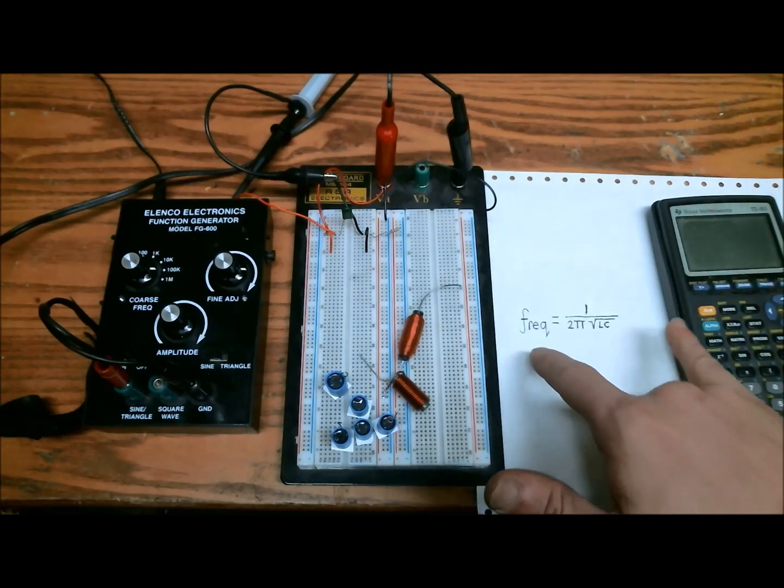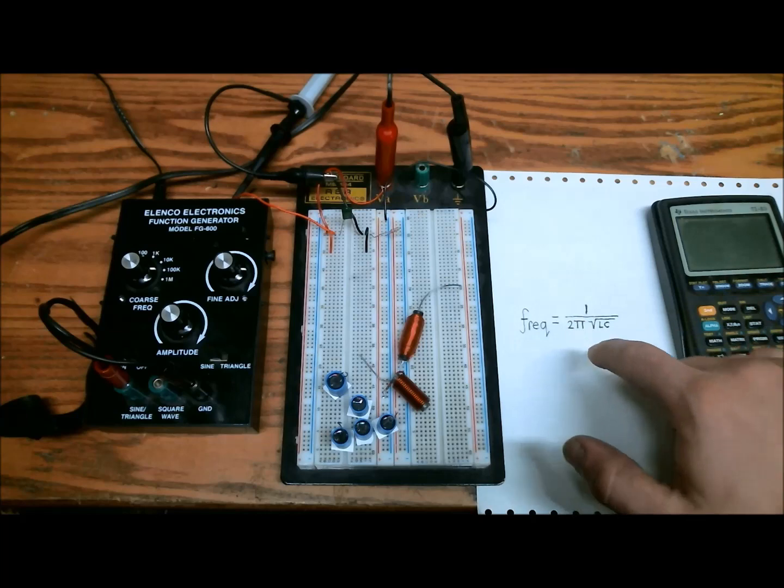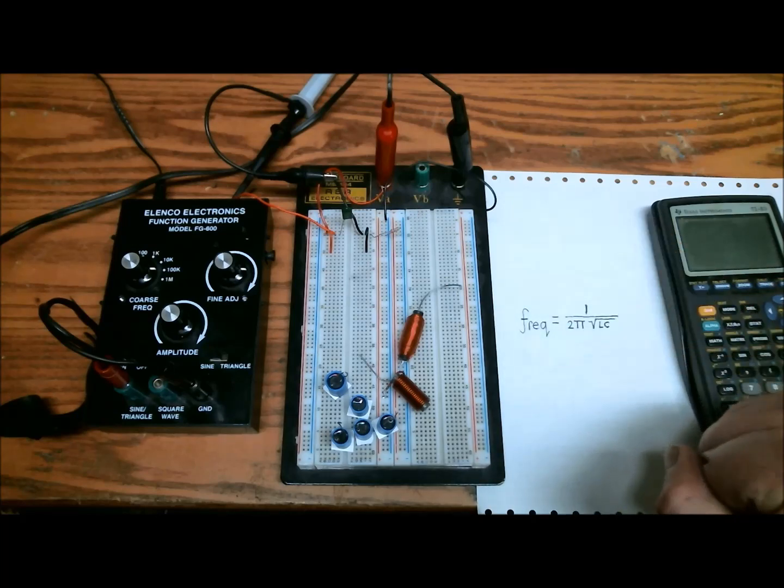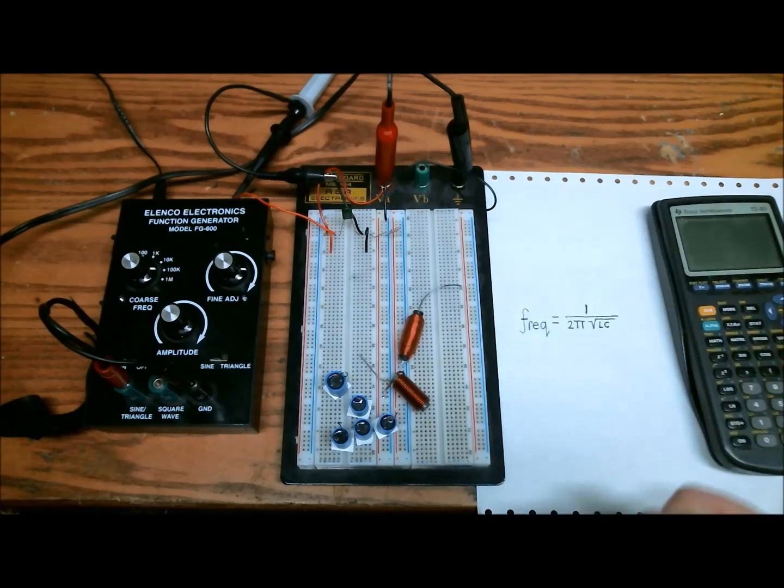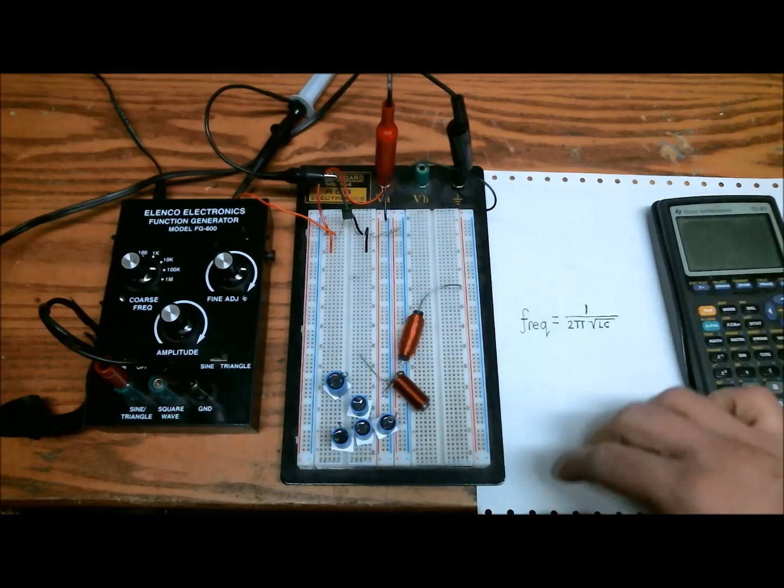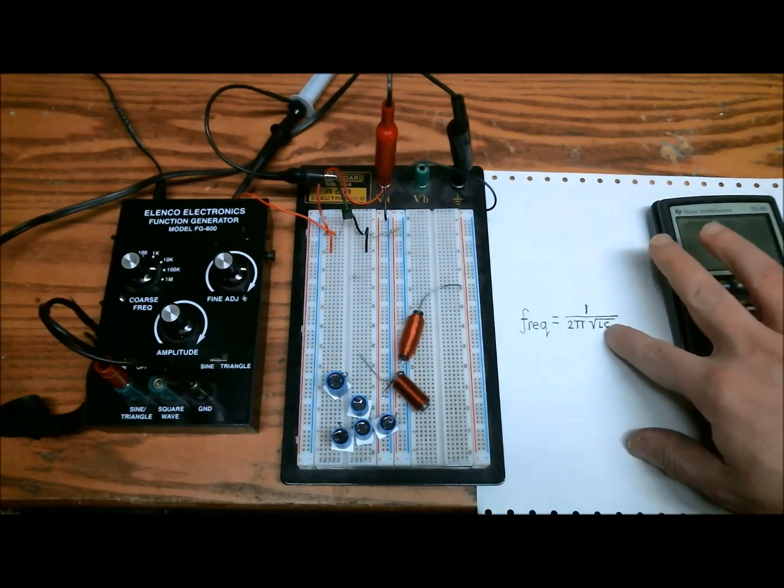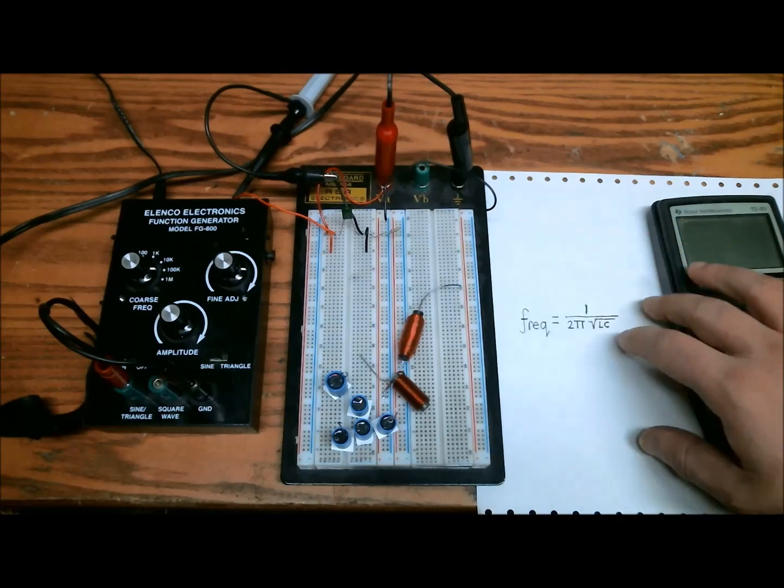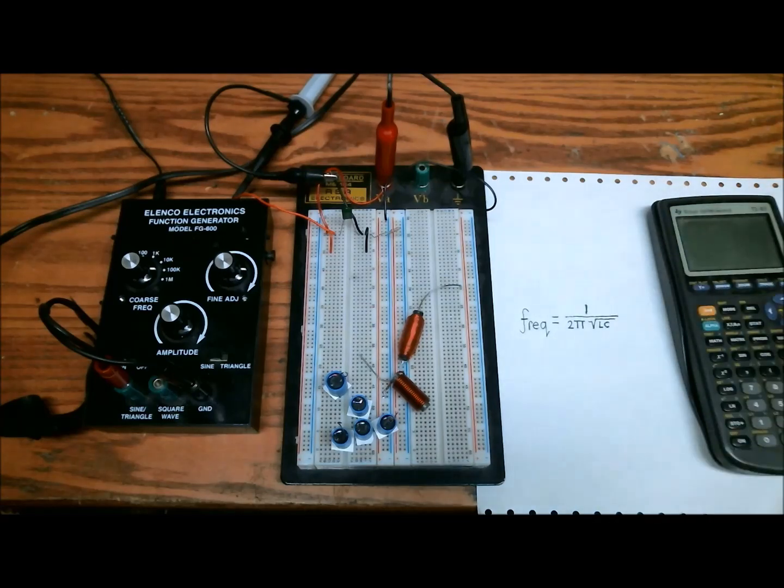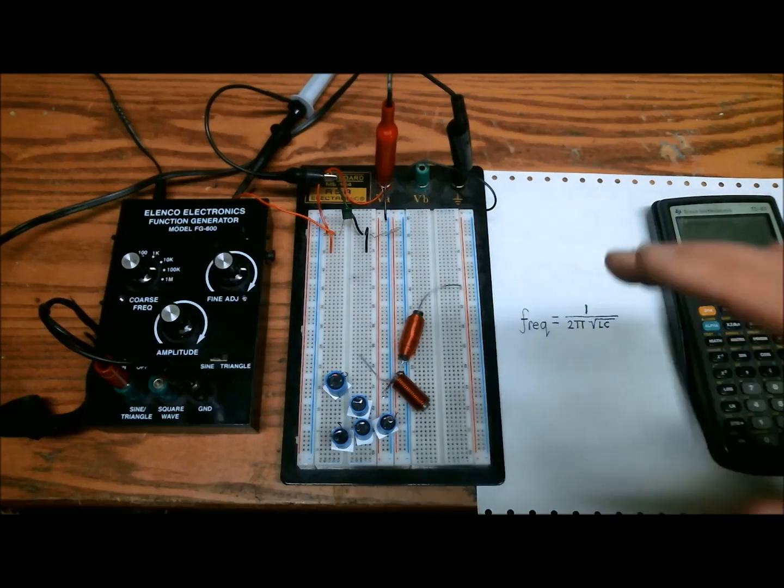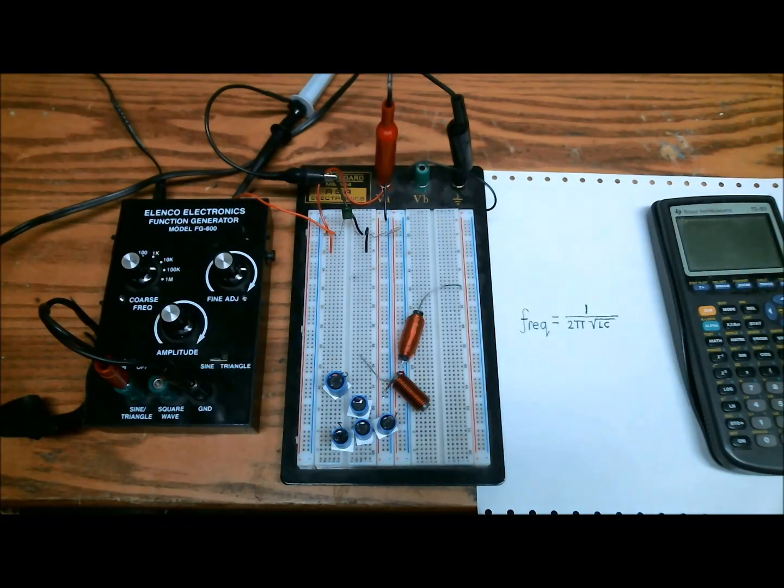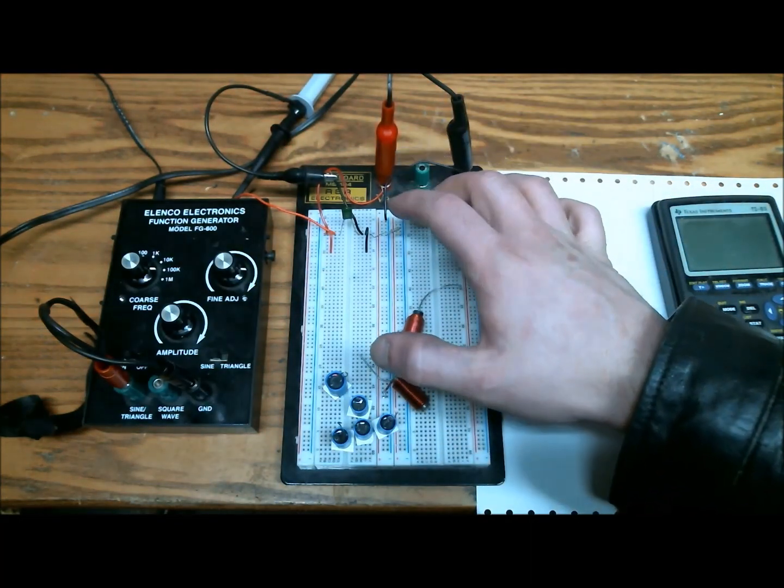So that equation is the resonant frequency equals the reciprocal of 2π times the square root of LC. And if you rework that, it's quite easy to find the unknown variable. So if you're solving for C or if you're solving for L, it's quite simple. So we will do that, but first I want to show you the circuit.